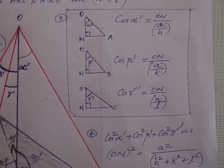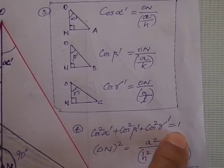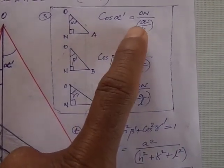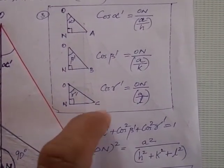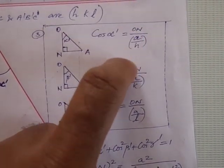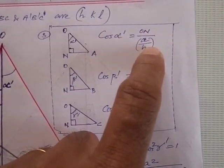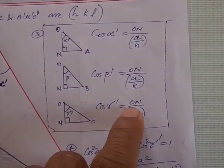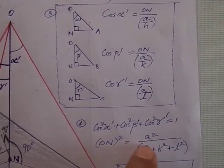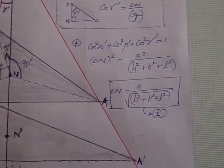Point number 3 is complete. Moving to point number 4: the standard equation cos²α' + cos²β' + cos²γ' = 1 is utilized. Substituting the cosine expressions and adding: ON²·(H² + K² + L²)/A² = 1. Therefore, ON = A / √(H² + K² + L²). This is equation number 1.